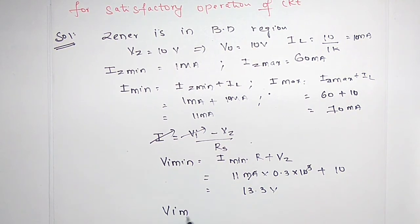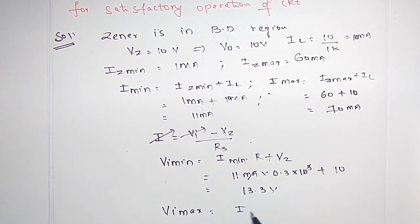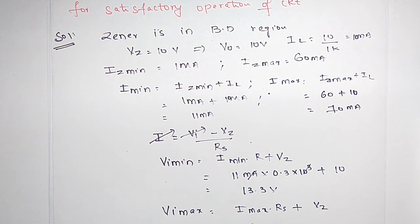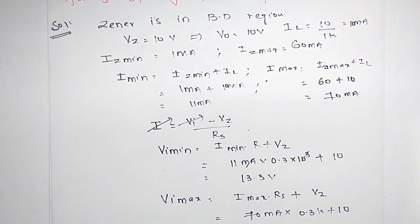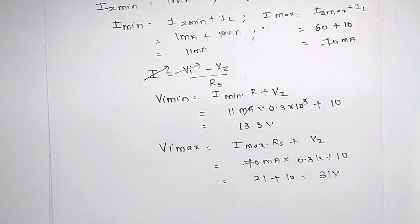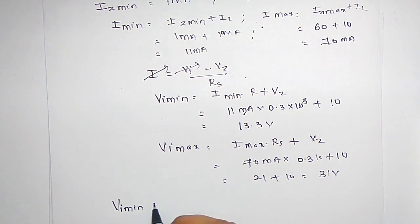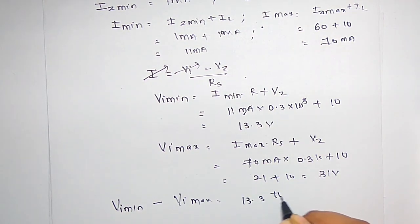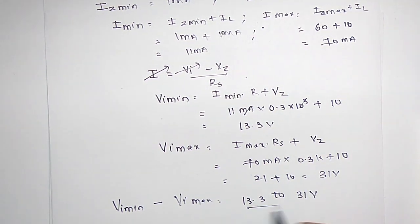VI maximum equals I maximum into RS plus Vz. So 70 milliamps into 0.3 kilo ohms plus 10, which is 21 plus 10, which is 31 volts. Therefore, the range of input voltages VI minimum to VI maximum is 13.3 volts to 31 volts. This is the required range.